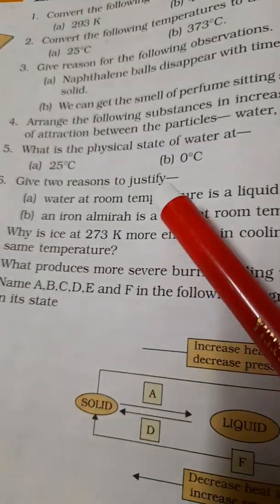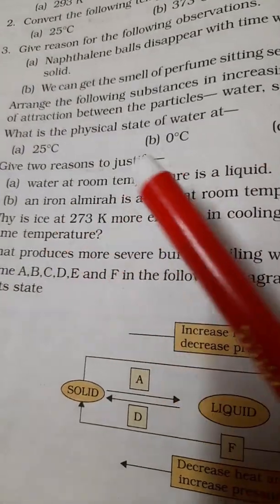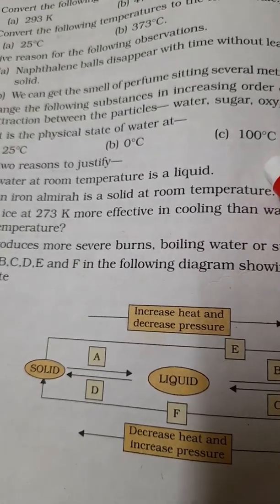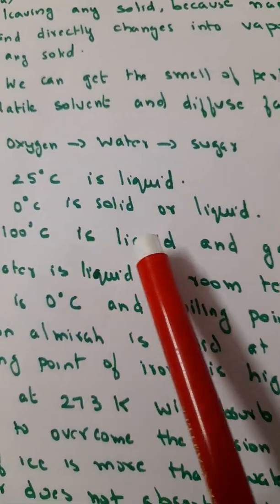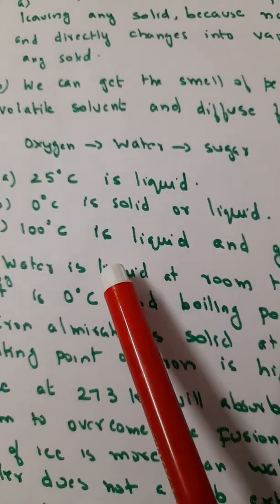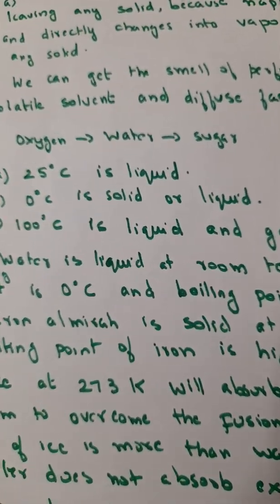Now next question: what is the physical state of water at 25 degrees Celsius, 0 degrees Celsius, 100 degrees Celsius? 25 degrees Celsius water is liquid, 0 degrees Celsius it is solid or liquid, 100 degrees Celsius it is liquid and gas. Fine.